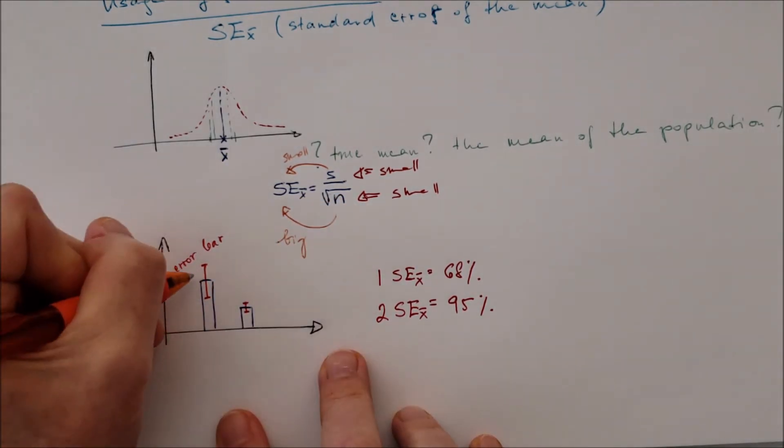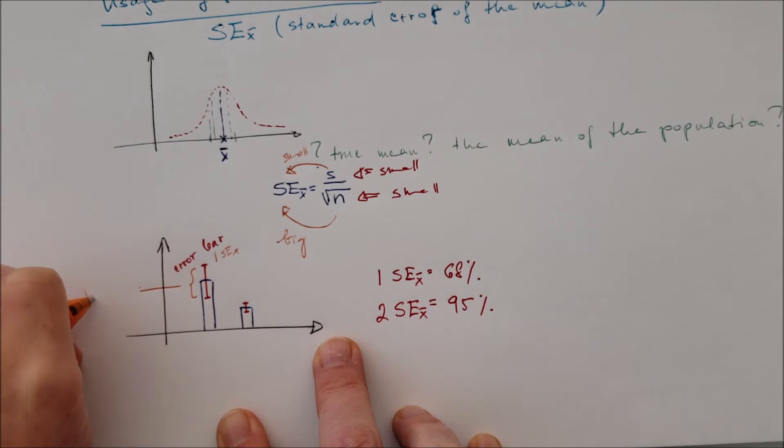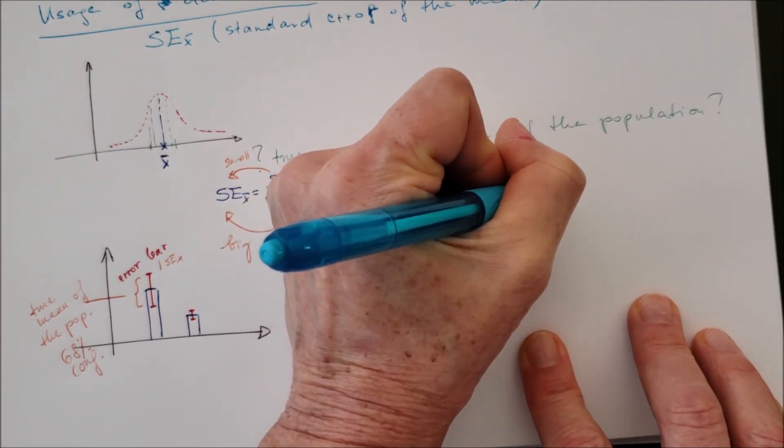One standard deviation gives us 68% confidence level. Two standard errors gives us 95% confidence. So this is the range somewhere in that orange where the true mean would be. If it's one standard error from the mean, it will be 68% confidence level.